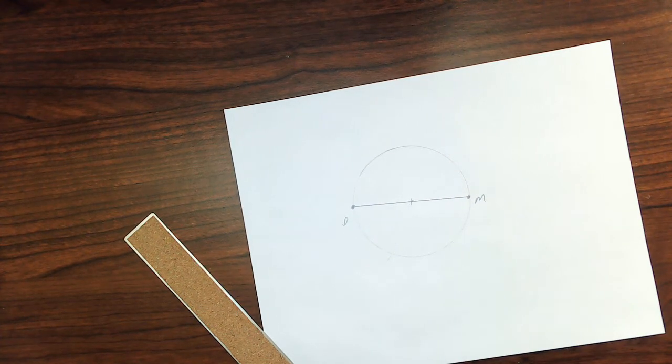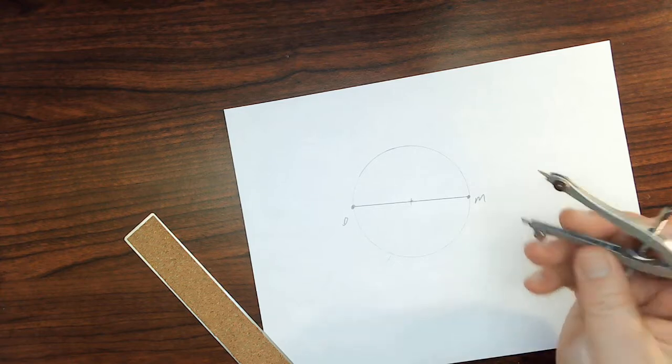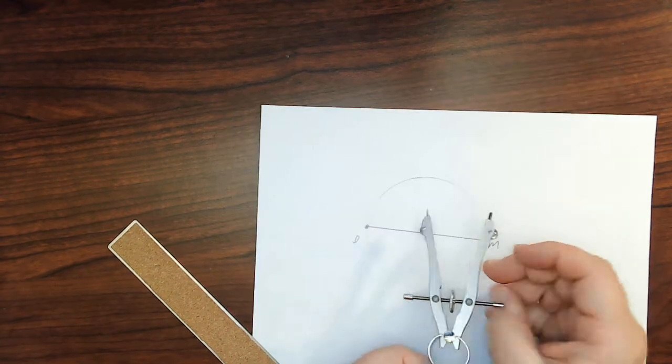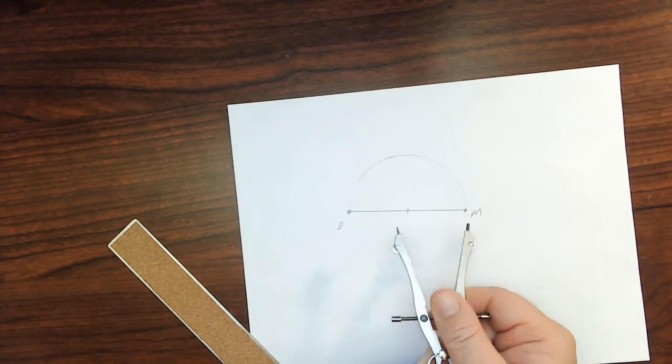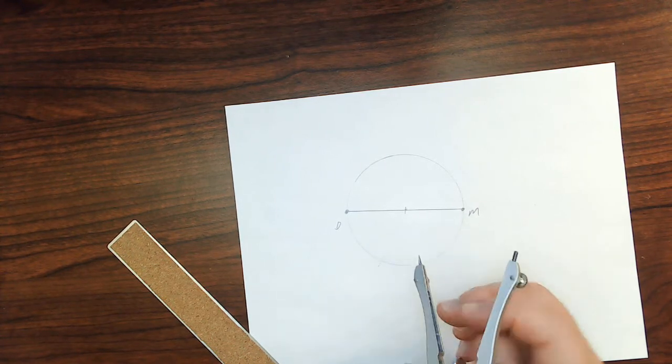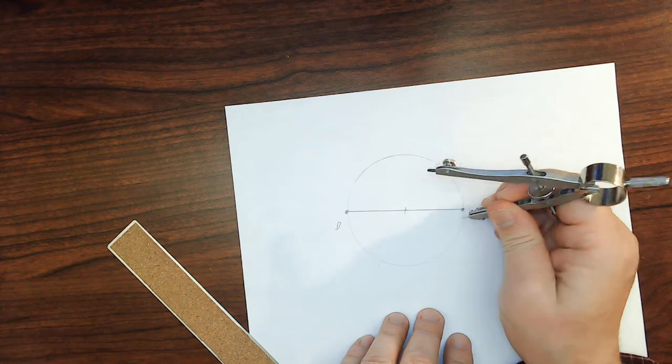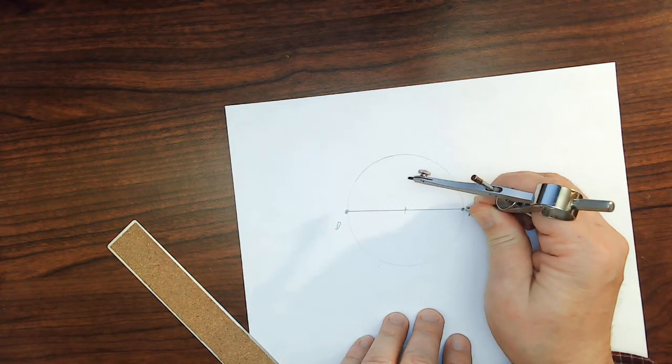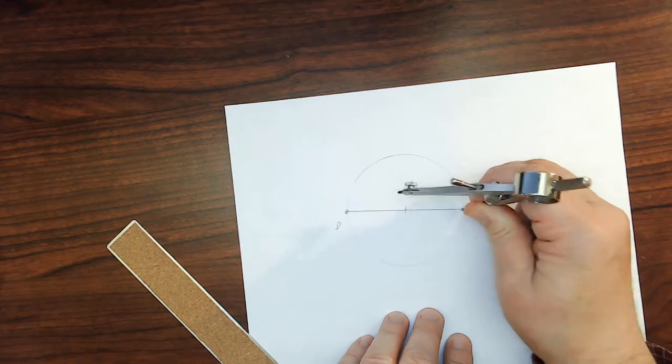Now to make the perpendicular bisector of this diameter, I'm going to open the compass a little further than it currently is. There it is. It's open now further than one radius. I'm going to put the pivot of the compass on one of the end points of the diameter,